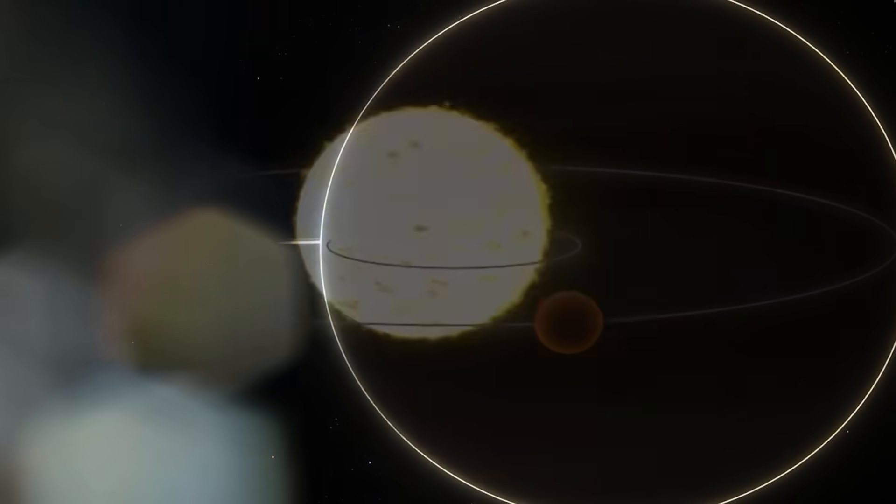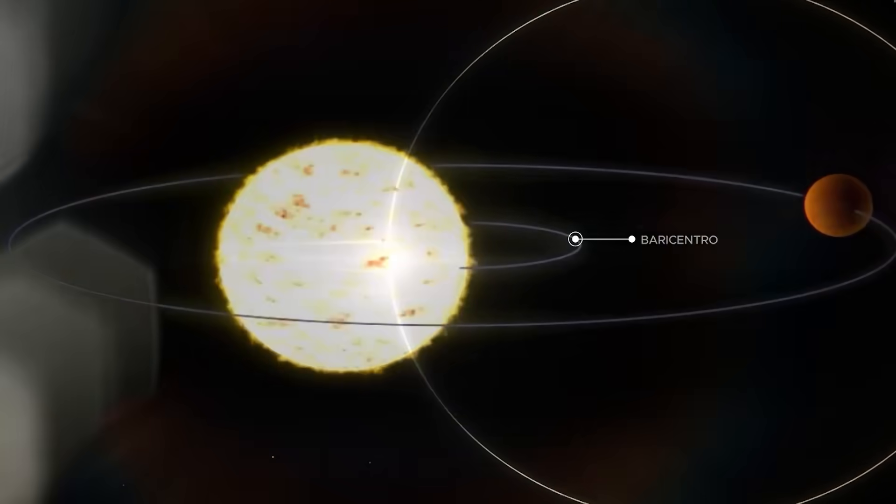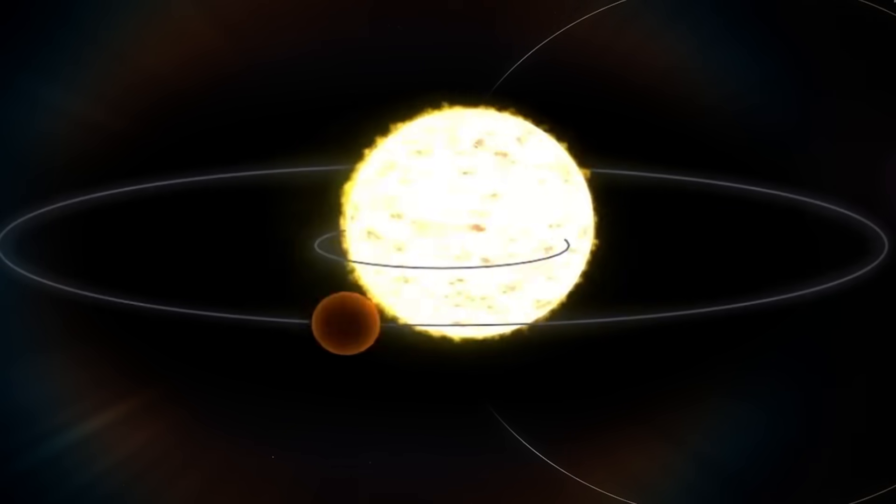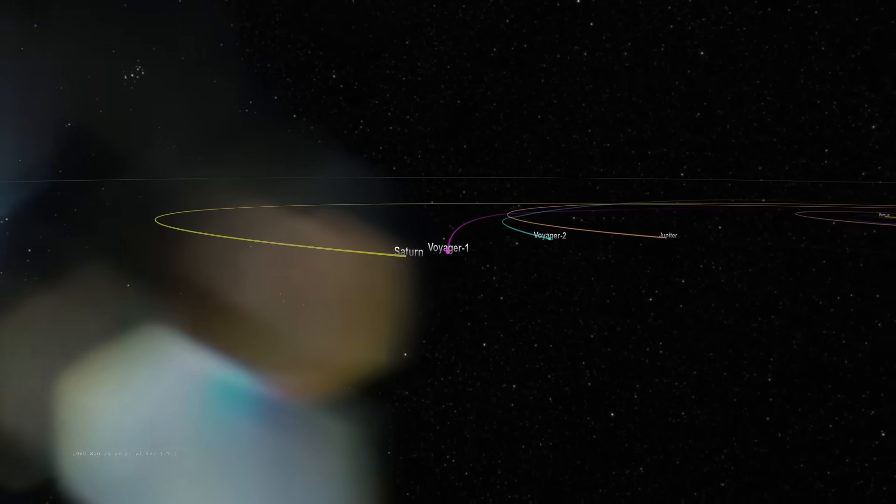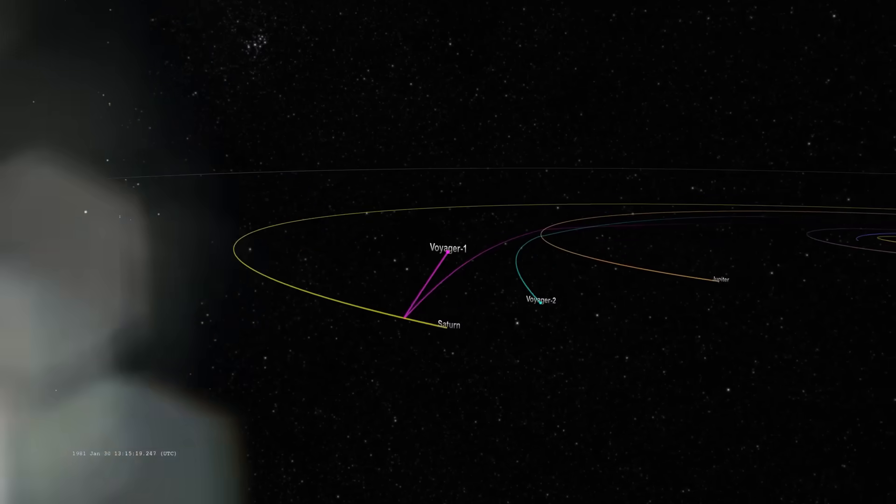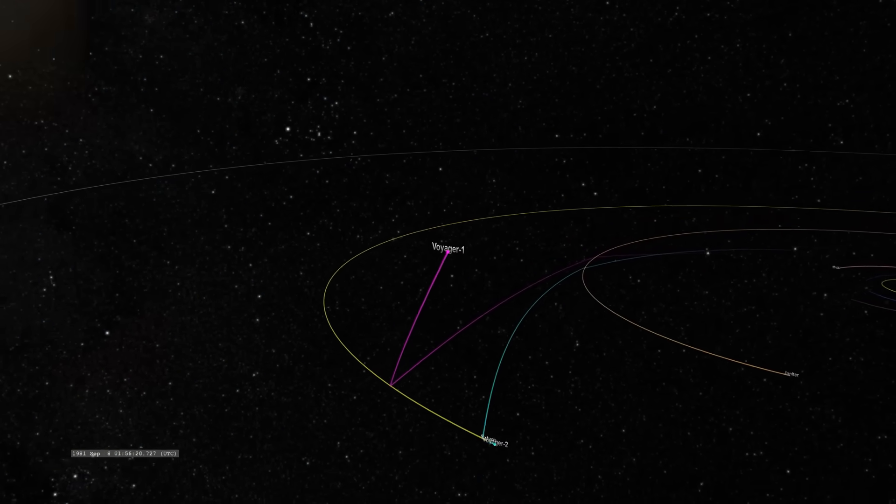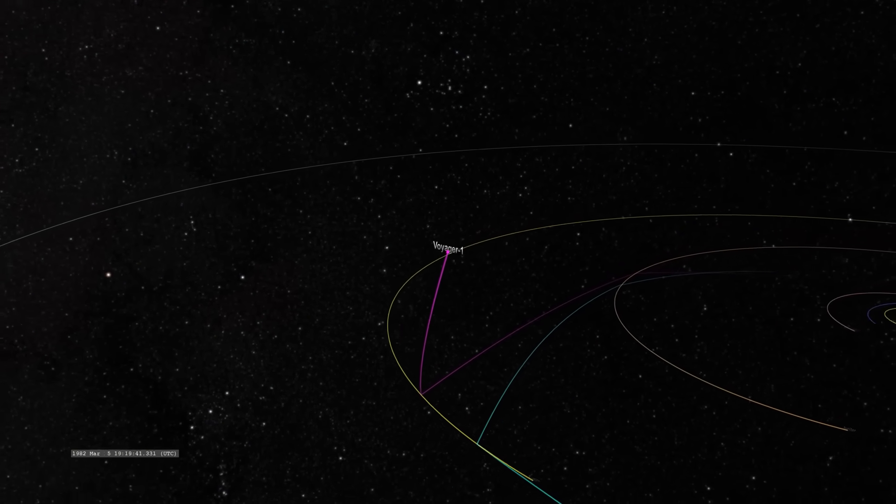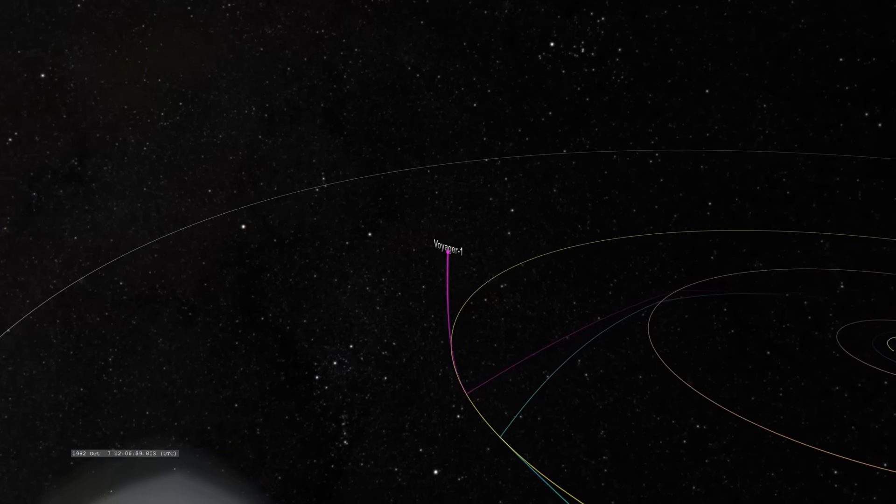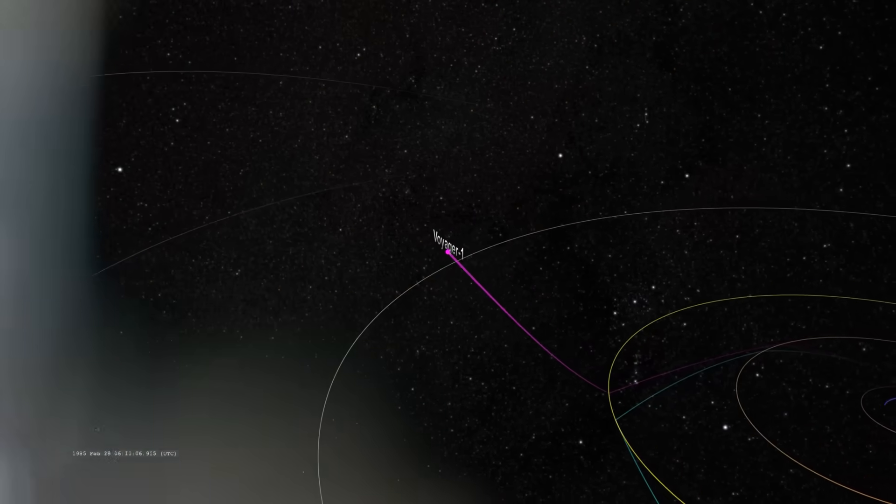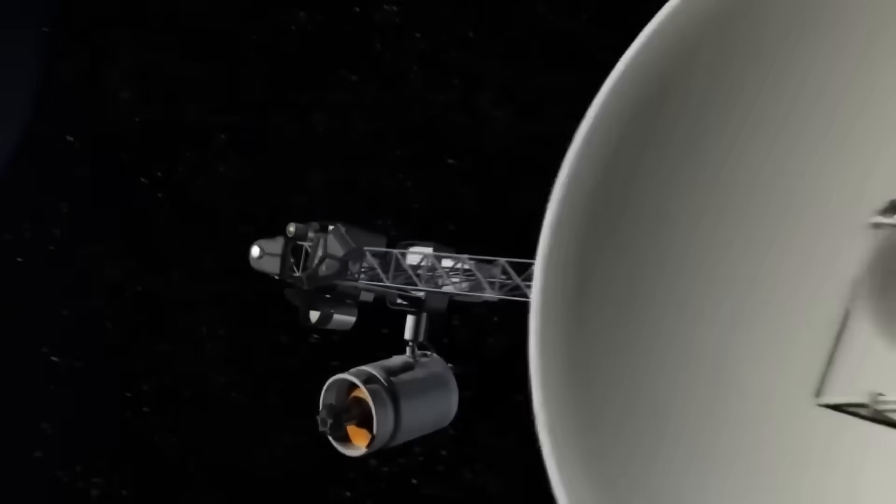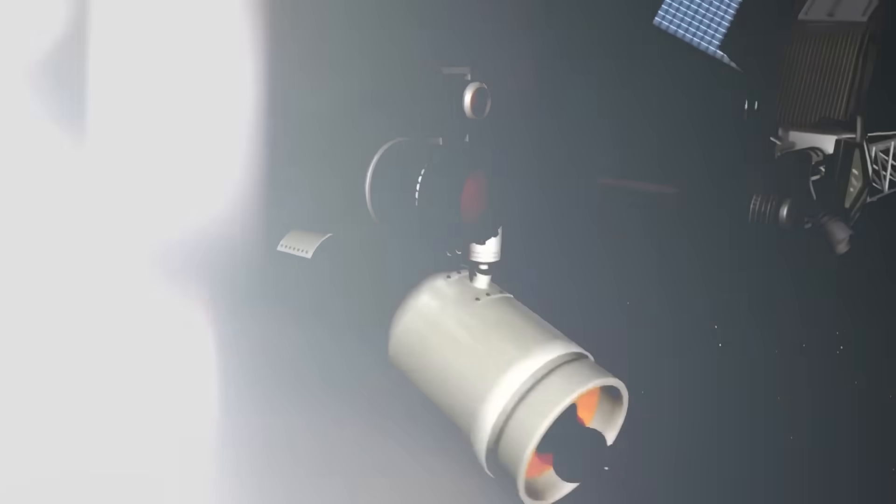Voyager 1 was never supposed to survive this long. It was designed for a planetary tour. Not an interstellar pilgrimage. It was never supposed to send back data beyond the edge of the solar wind. And it was certainly never built to receive anything. It was meant to speak. To declare our presence to the stars with a golden record of whale songs, human laughter, and distant greetings. But now, decades after we last touched its frame, after it slipped into the void and disappeared into silence, it has done something no one predicted. It turned. Not in failure, but in purpose.